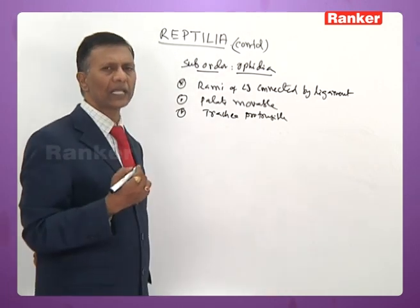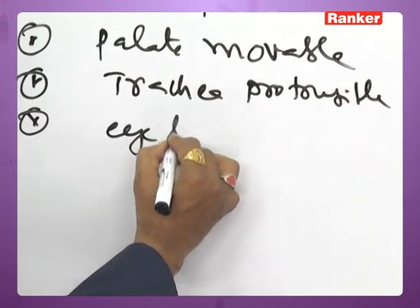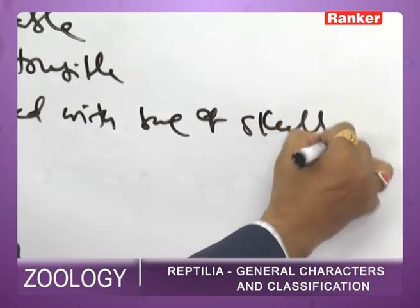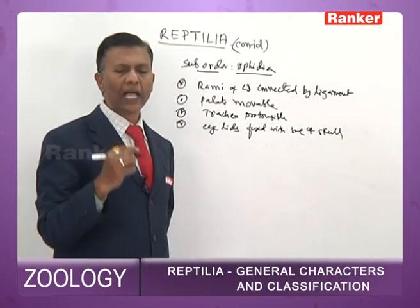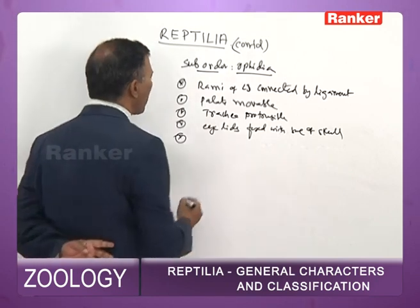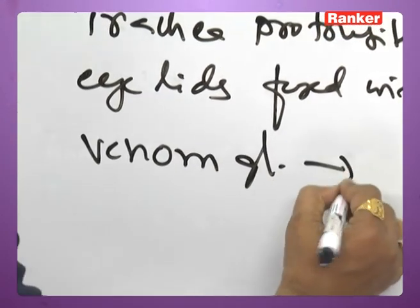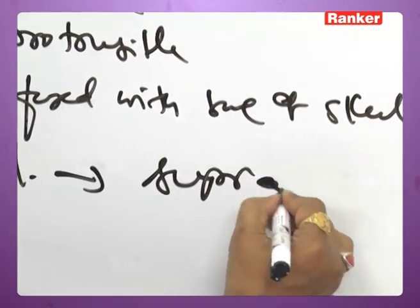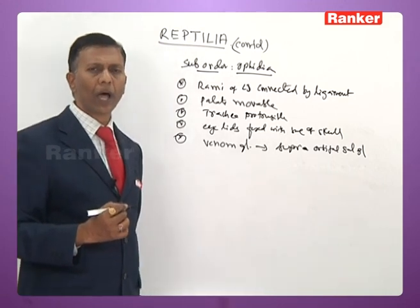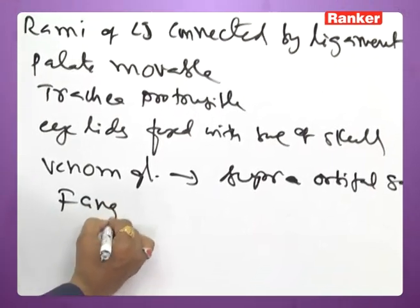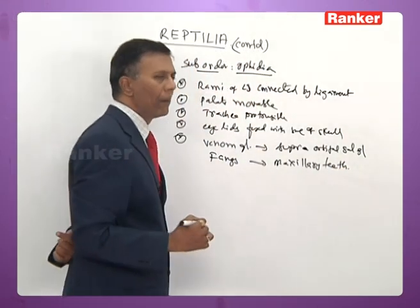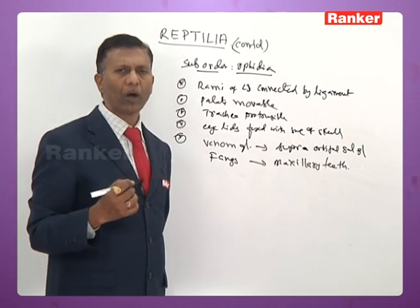In snakes, the eyelids are fused with the bones of the skull, giving them an unwinking stare, and eyes are covered by a transparent cuticle. The venom gland is a modified supraorbital salivary gland. Fangs are modified maxillary teeth.